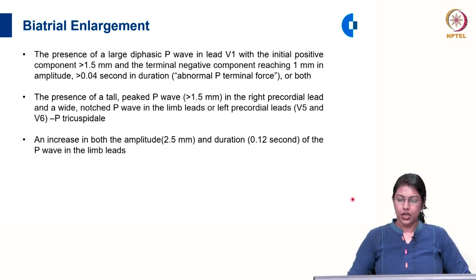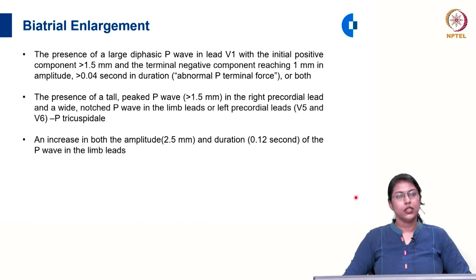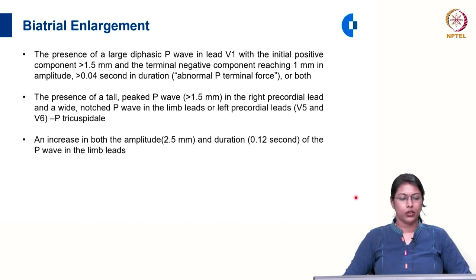In biatrial enlargement, both the findings of left atrial abnormality and right atrial abnormality will be present. There will be a large diphasic P wave in V1 with an initial positive component more than 1.5 millimetre and a terminal negative component more than 1 millimetre in amplitude and more than 0.04 second in duration. Or there may be a tall peaked P wave in right precordial leads and a wide notched P wave in the limb leads or left precordial leads like V5, V6.